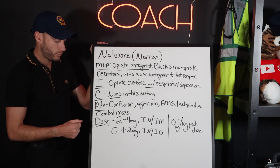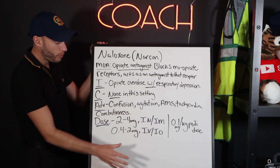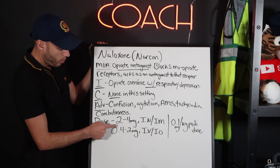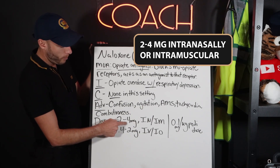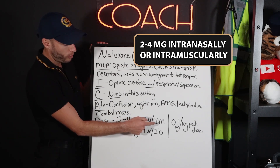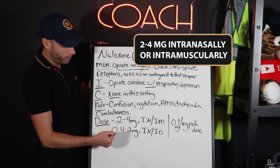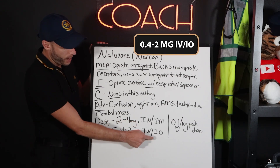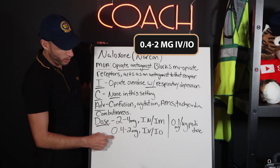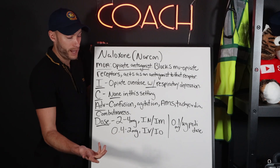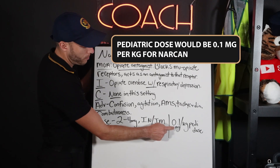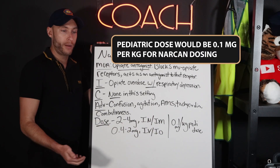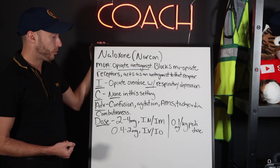For dosing, the adult dose — this is like a national standard — would be two to four milligrams intranasally or intramuscularly. Intranasal is very common. IV/IO would be 0.4 milligrams, and the pediatric dose would be 0.1 milligrams per kilogram for Narcan dosing.